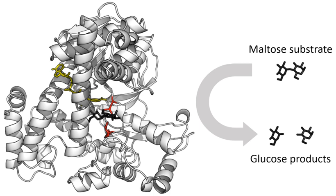Following Buchner's example, enzymes are usually named according to the reaction they carry out. The suffix –ase is combined with the name of the substrate — e.g., lactase is the enzyme that cleaves lactose — or to the type of reaction — e.g., DNA polymerase forms DNA polymers. The biochemical identity of enzymes was still unknown in the early 1900s. Many scientists observed that enzymatic activity was associated with proteins, but others such as Nobel laureate Richard Willstätter argued that proteins were merely carriers for the true enzymes and that proteins per se were incapable of catalysis.